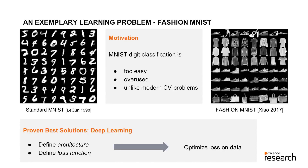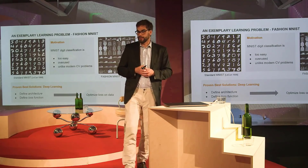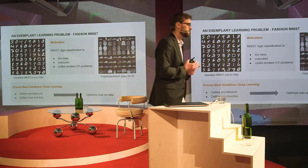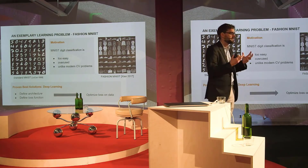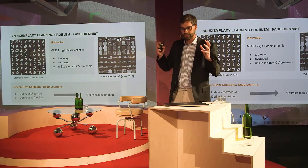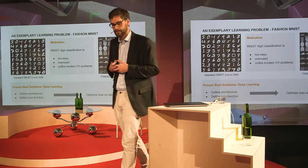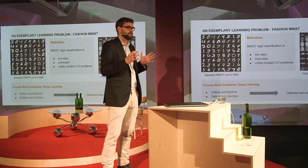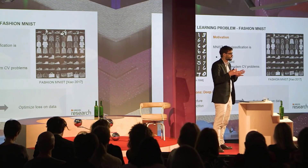It had such a big impact because it's the same data format. In the image space, the best solutions are deep learning, and for deep learning, you mainly have to define two things: the architecture — that is, how you build your network, how you connect your neurons to produce an output from the input — and the loss function, which is how you measure how good your system is.